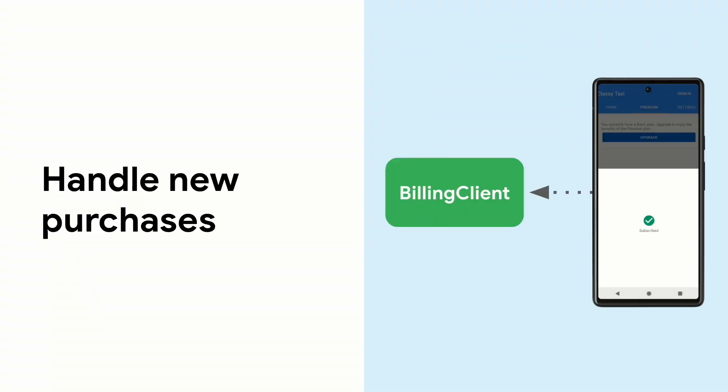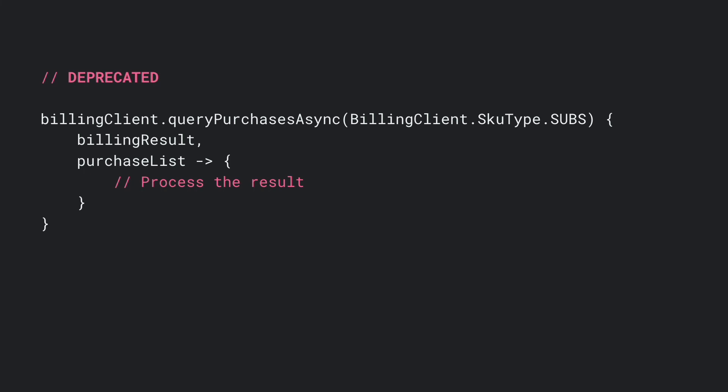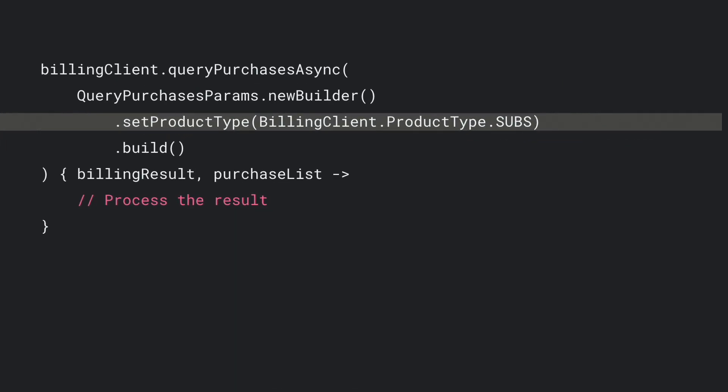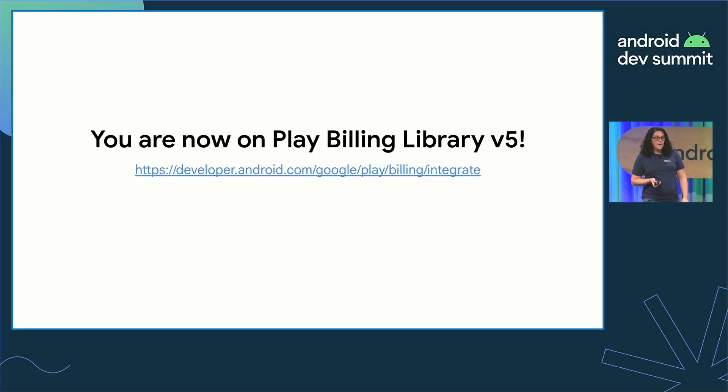After the user goes through the billing flow, it's time to handle the outcome. This step is very similar to before. The only change is how you pull new active purchases — since the SKU type is deprecated, you will now call queryPurchasesAsync with a QueryPurchasesParams object. In this object, you use the setProductType method to indicate what kinds of purchases you're pulling. There's a new enum ProductType that lets you indicate whether they are subscriptions or in-app products. These are the main changes in your Play Billing Library 5 integration.